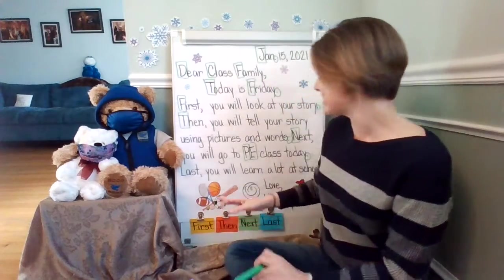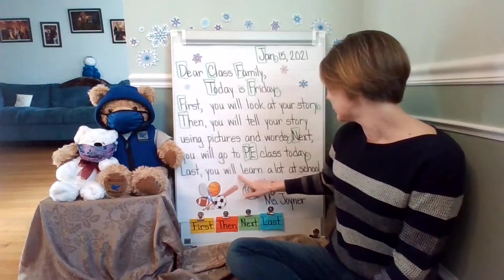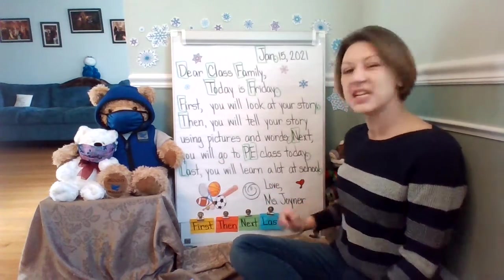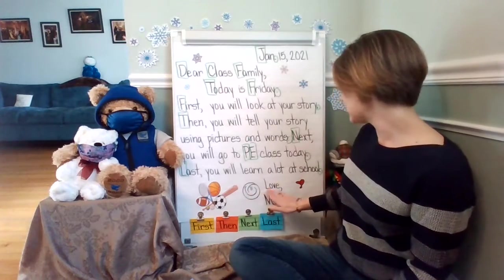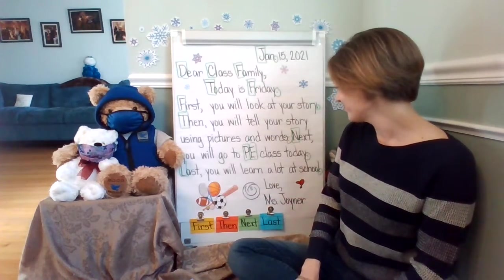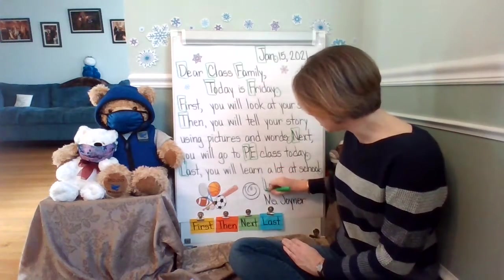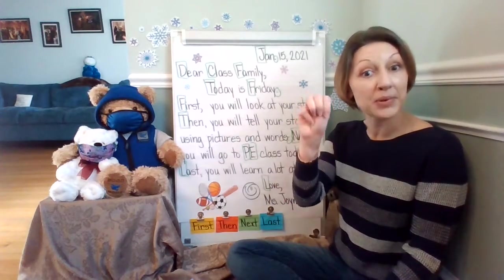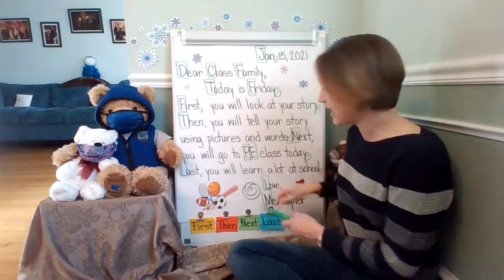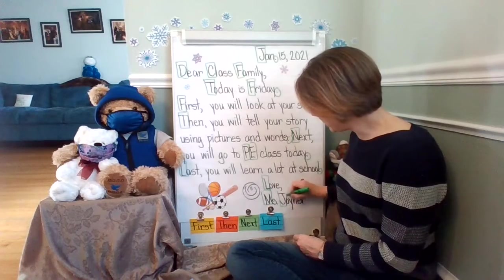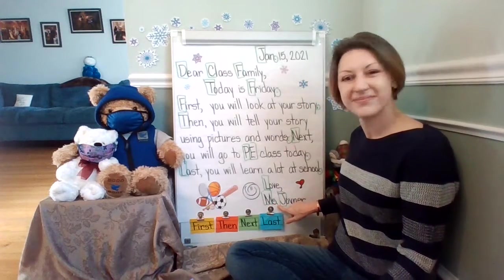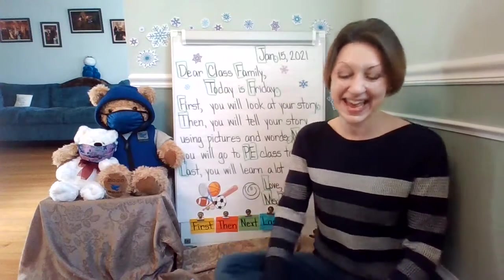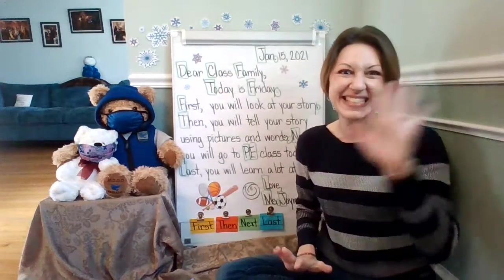Let's look at the last sentence: Last, you will learn a lot at school. Let's box the L and circle the period. In the closing it says Love, Miss Joyner. The capital L in the closing, Love. And then the signature: Miss Joyner — capital M and a capital J. Did anybody notice what is after Miss? It is a period. All right, class family, let's have a fantastic Friday. See you next week. Bye!